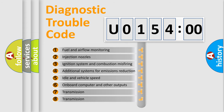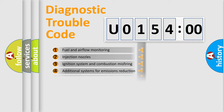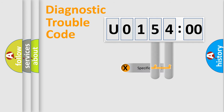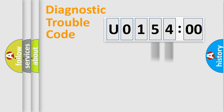The third character specifies a subset of errors. The distribution shown is valid only for the standardized DTC code. Only the last two characters define the specific fault of the group.